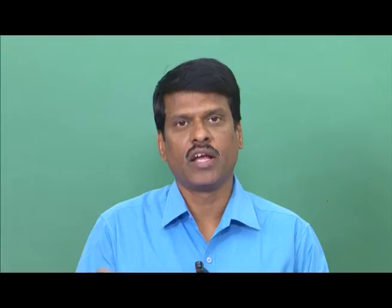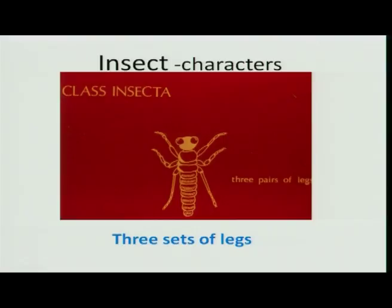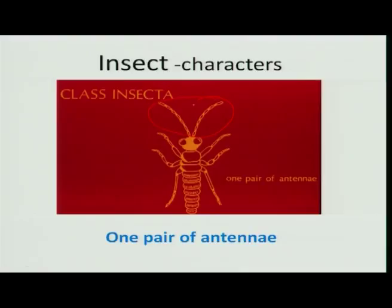There are three to four basic characters by which anybody can identify an organism as an insect. Insects have three body divisions: head, thorax, and abdomen, which are easily distinguishable. All insects have three pairs of legs — six legs in total — which is why they are referred to as Hexapoda, where 'hexa' means six and 'poda' means legs. Each pair of legs arises from each of the thoracic segments. They also have a pair of antennae situated on the head, which act as sensory structures. The majority of insects possess wings, either one pair or two pairs. With these characters, it is quite possible to identify insects.